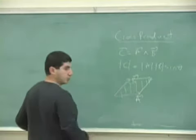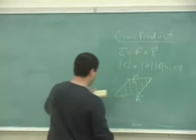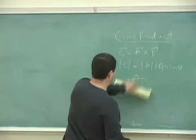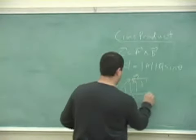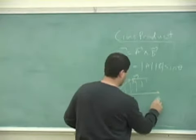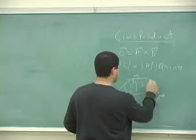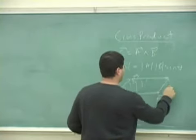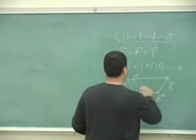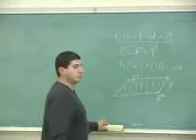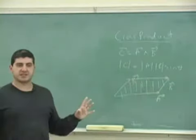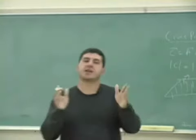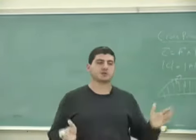Actually, in this case it looks like a rhombus, because I drew a similar magnitude. Let's say I draw A a little bigger. So one of the things that the cross product gives you is the area of the parallelogram.